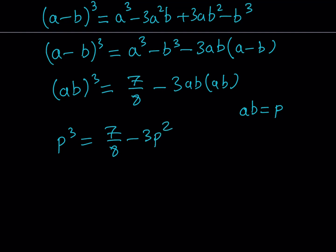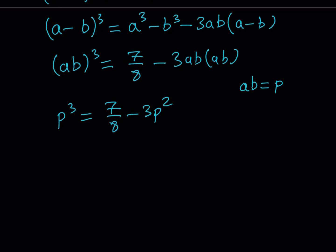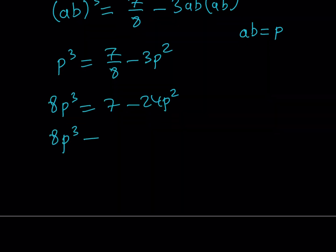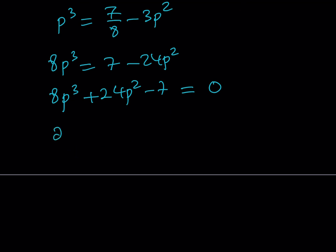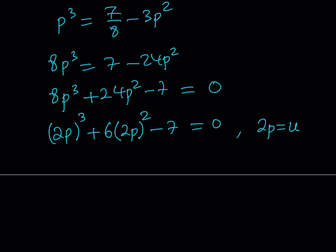I don't like fractions, so I'll multiply everything by 8 and put everything on one side to get a cubic. This cubic is special — I can write it as 8p cubed plus 24p squared minus 7 equals 0, which factors as (2p) cubed plus 6 times (2p) squared minus 7 equals 0. So I do another substitution: let u equal 2p, giving u cubed plus 6u squared minus 7 equals 0.